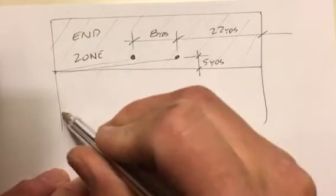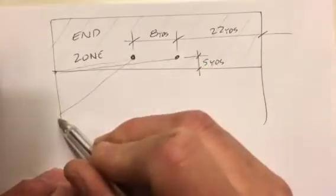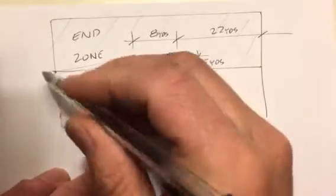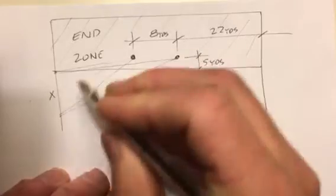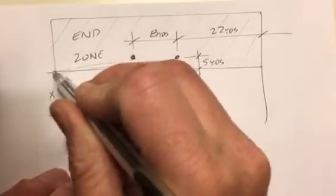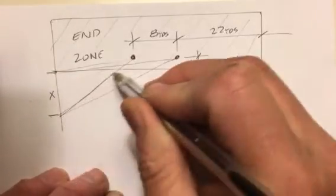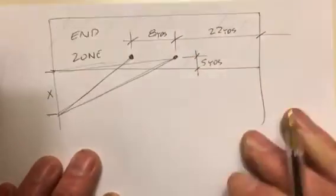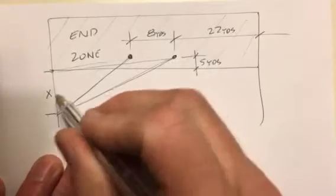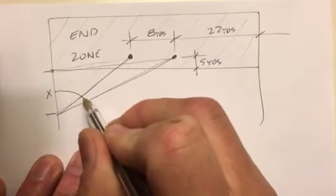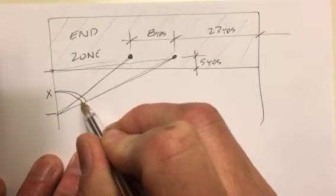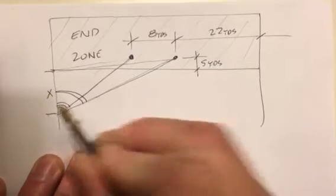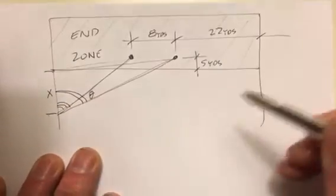You could back up even more to get a little better angle at the goal post. The question is: at what spot back here, what distance x back from the end line, will you get the optimum angle to go through the goal post? Essentially what we have to do is work out the larger angle and then subtract the smaller angle, and that'll give us the angle theta that we're trying to optimize.